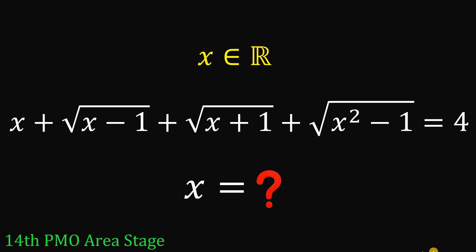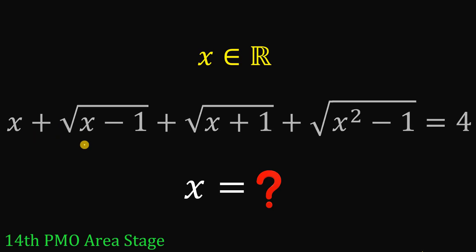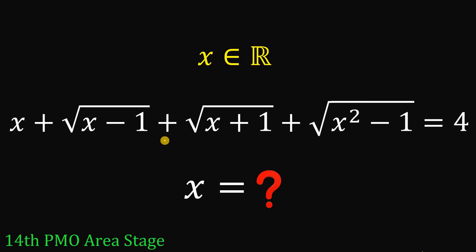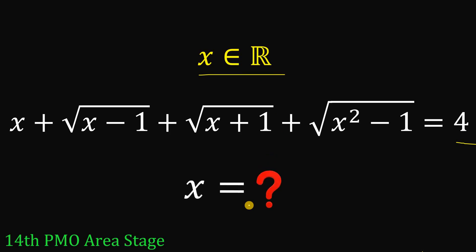For today's video, we will try to answer an item coming from the 14th Philippine Mathematical Olympiad area stage. Given the equation x plus square root of x minus 1 plus square root of x plus 1 plus square root of x squared minus 1 equals 4, where x is a real number, our goal is to find the value of x.